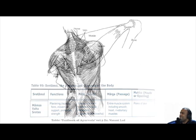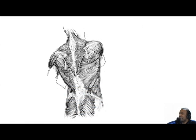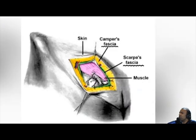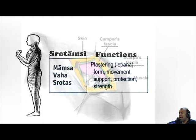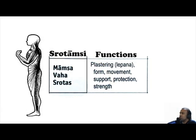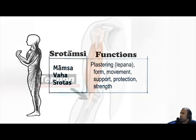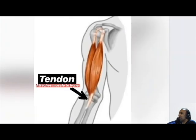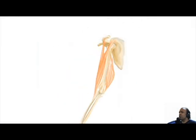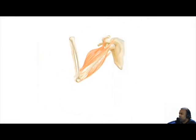Fascia is connective tissue that attaches, stabilizes, and separates muscles from other internal organs — hence the function of Mumsadatu being that of plastering, along with structure and support. Tendons are connective tissue that connects muscle to bone, and tendons and muscle work together in order to exert the force required for movement.